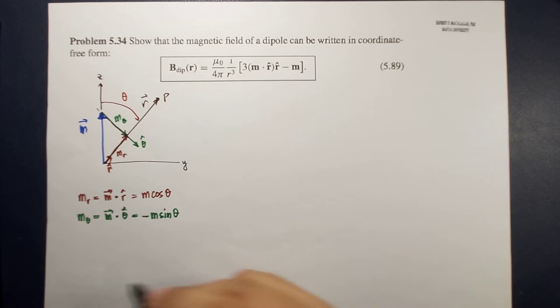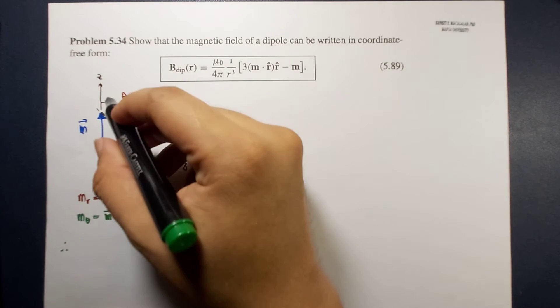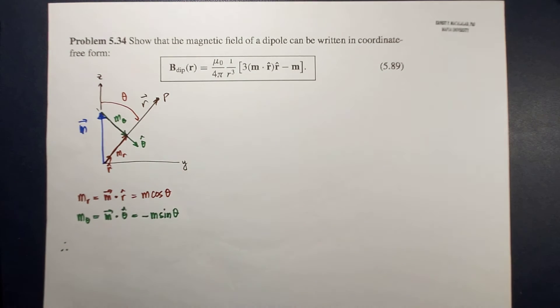Okay, so therefore, in terms of r hat and phi hat, the magnetic dipole moment m is equal to m cosine theta.